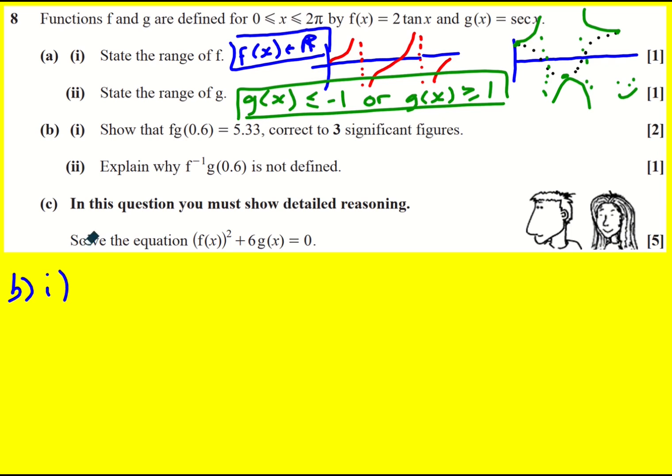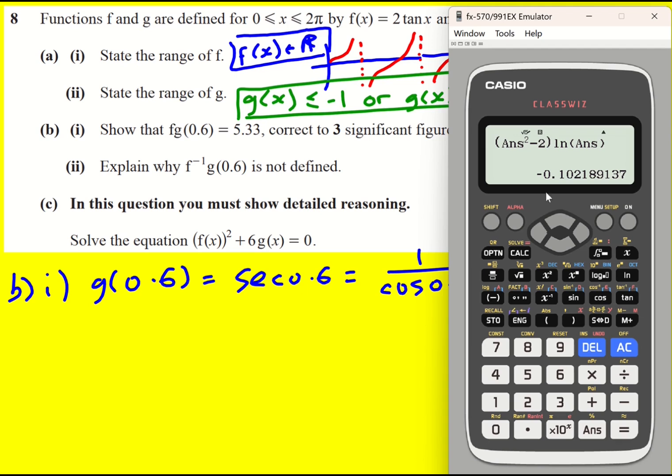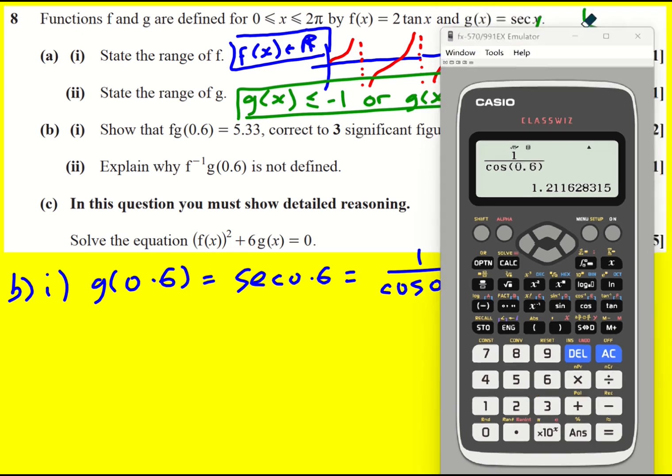On to b. So we're asked to show that f(g(0.6)) is 5.33. Let's find g(0.6) to start with. That's going to be sec(0.6), which I did very quickly. I didn't even talk about it being one over cos. But it's going to be one over cos(0.6). Now just make sure you've got your calculator in radians. Mine is already. So 1 over 1.2116.